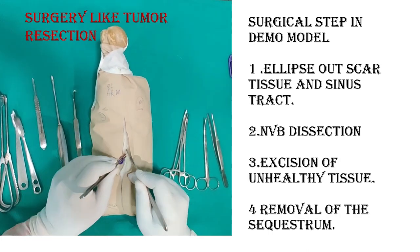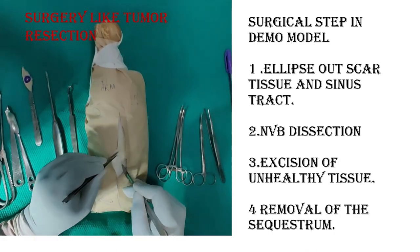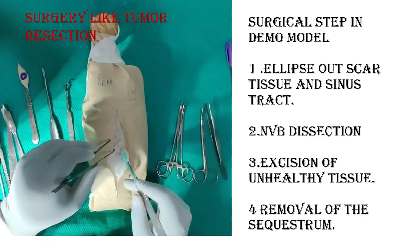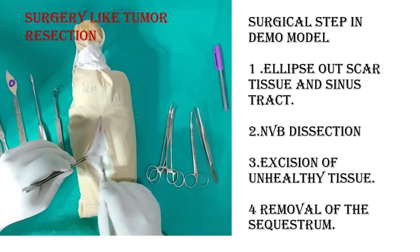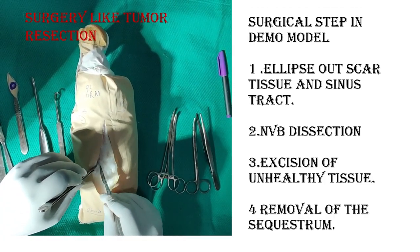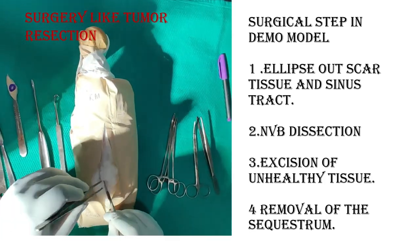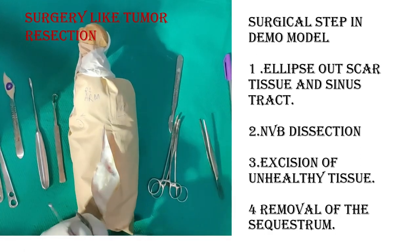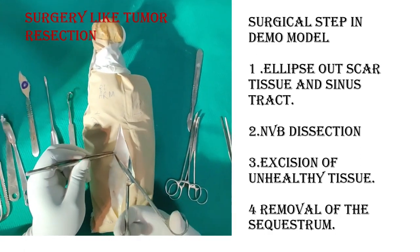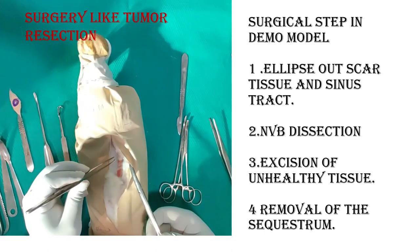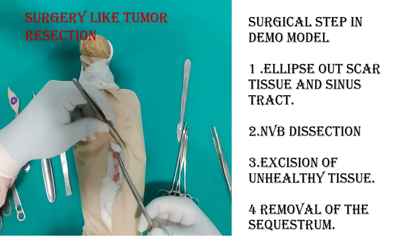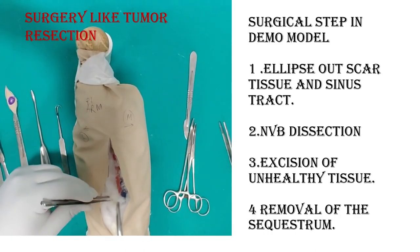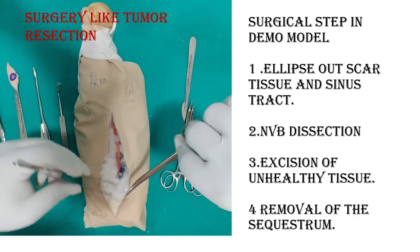After dissection of the skin and the sinus tract, you have to go inside and make a flap. First, you have to dissect the main important anatomy just beside the sinus tract. The important anatomy here is the neurovascular bundle. After making separation of the unhealthy tissue, we have to dissect the neurovascular bundle, and this must be done by blunt dissection. This blunt dissection is a very tricky procedure and you have to be very skillful.